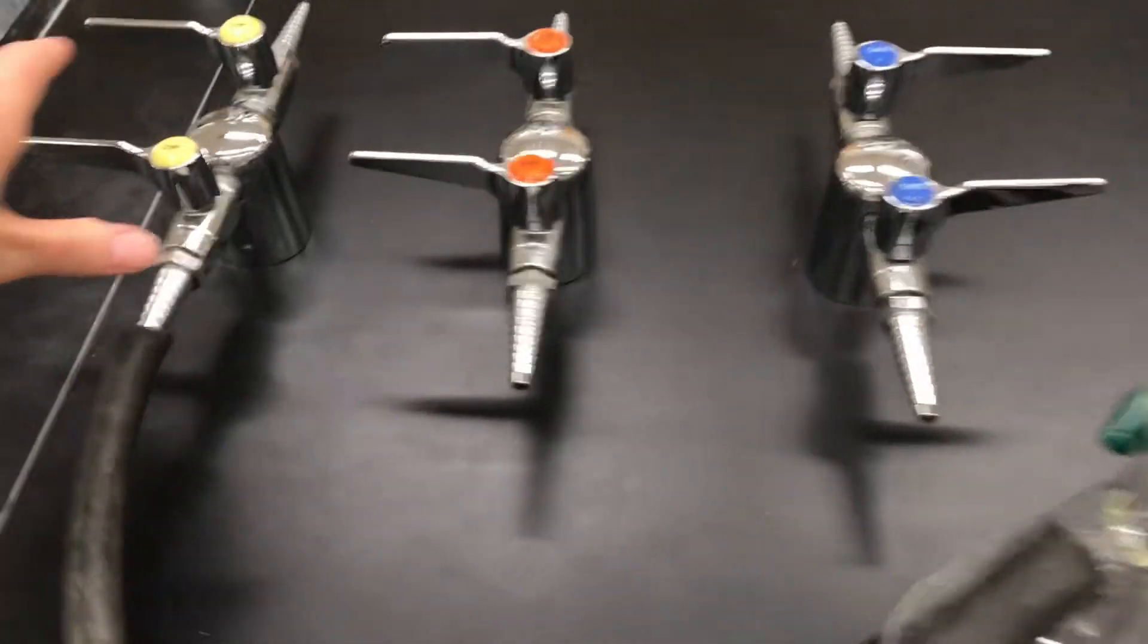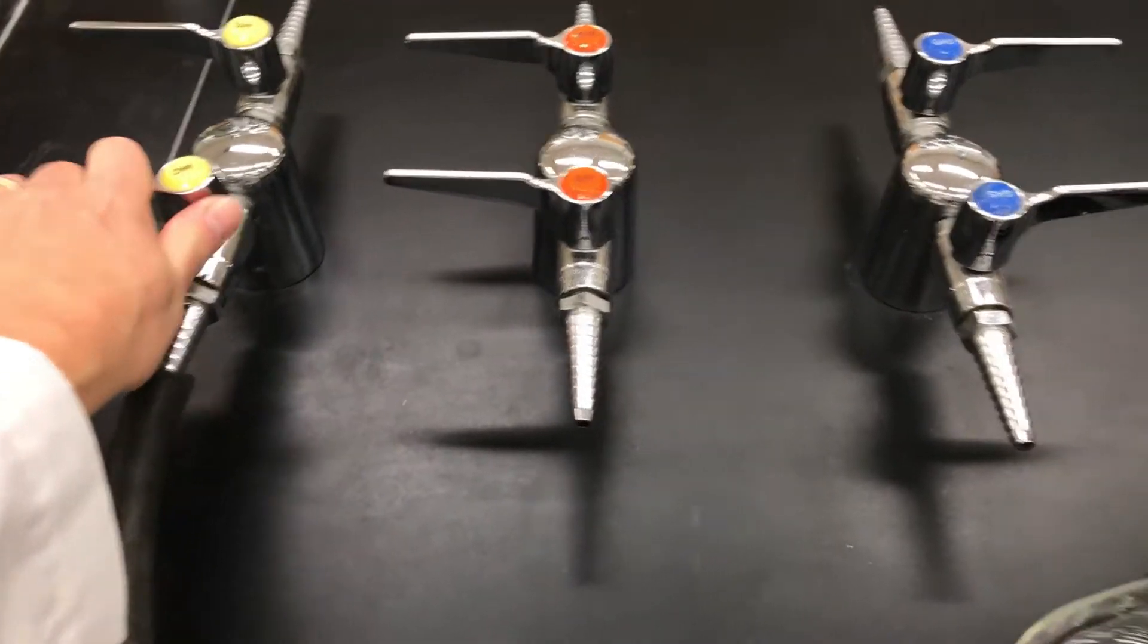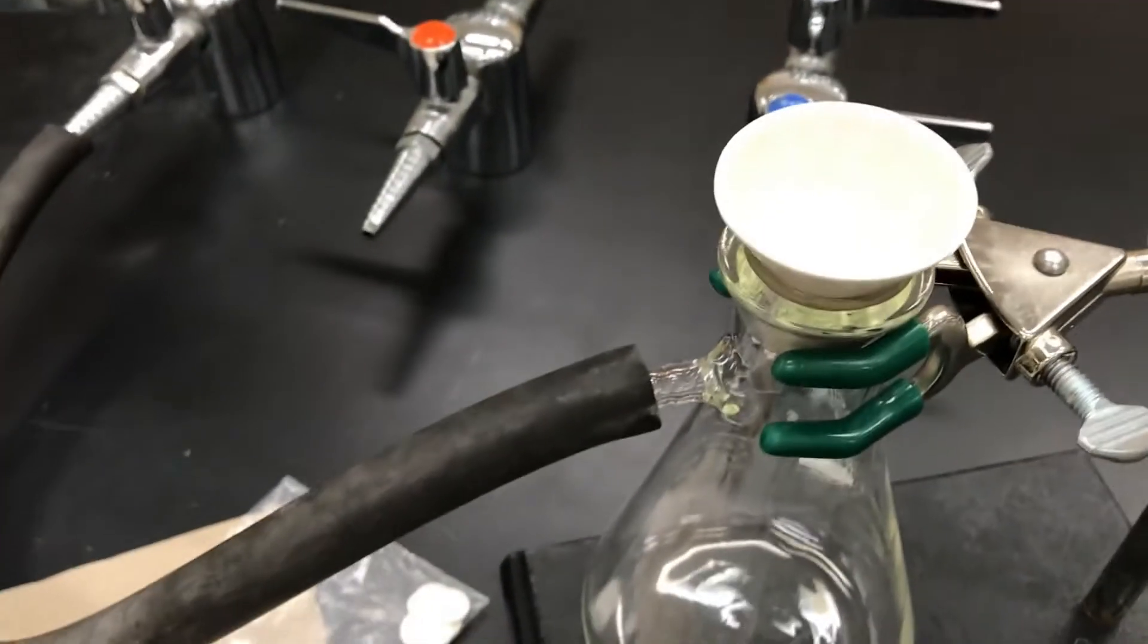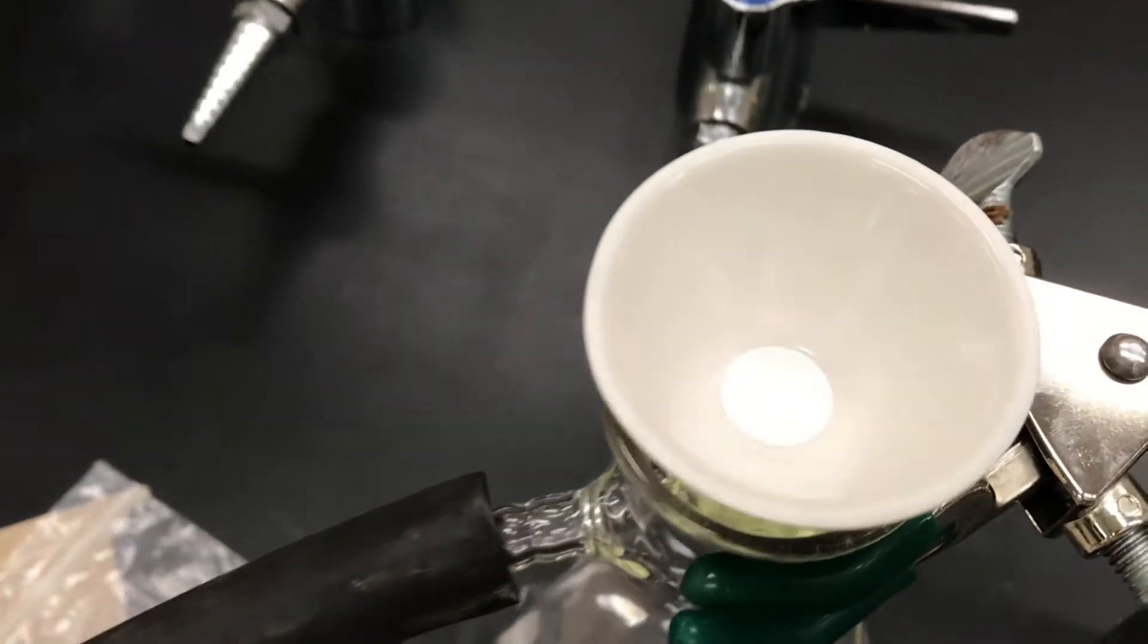To start filtering, you'd want to first turn on the vacuum, and then you might want to push down on the funnel to make sure that it's a good fit.